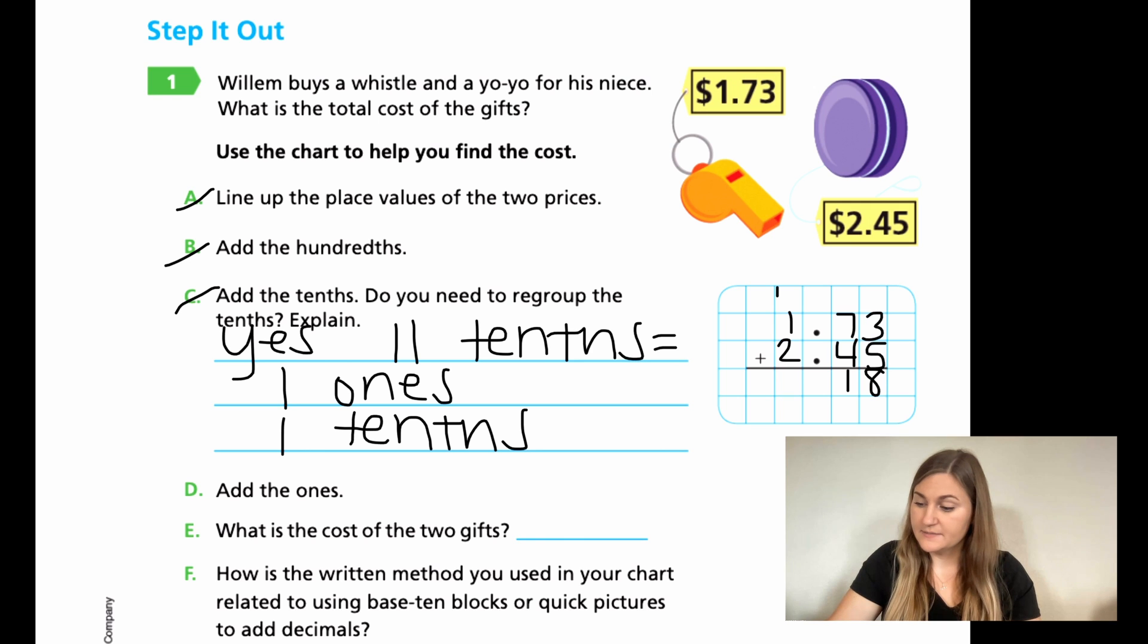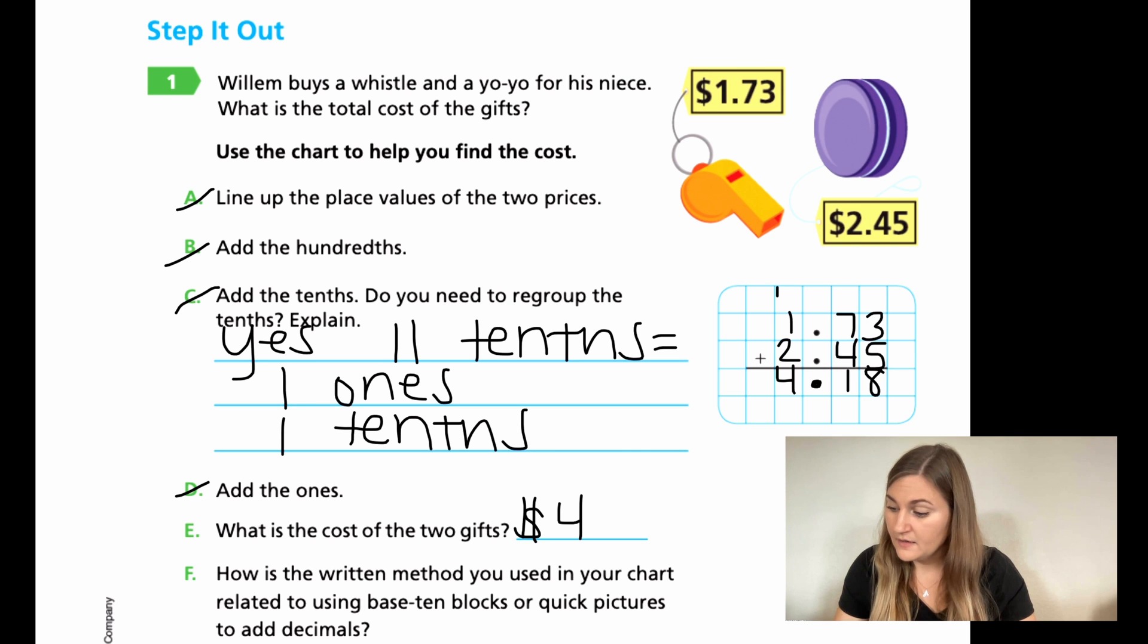D, add the ones. I'm surprised they didn't say bring down the decimal. That's definitely what we need to do first. Bring down that decimal. Place it in its own little square. Now add the ones. 1 plus 2 is 3. Don't forget the number that we carried over. So that's actually going to be 4. So what is the cost of the two gifts? Now we're just taking that number and writing it as money. So it's going to be $4.18.